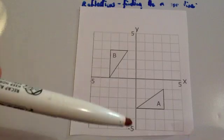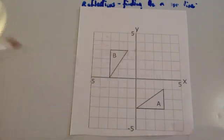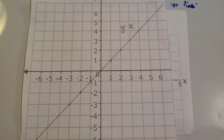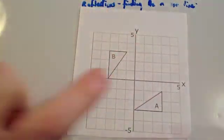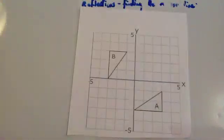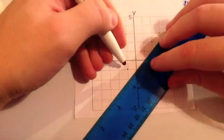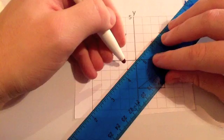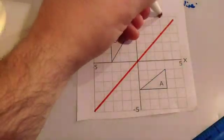This time it's not an x equals or y equals a number graph, because the shape hasn't been flipped vertically or horizontally — it's a diagonal line. In GCSE there are only two diagonal equations they use: y equals x or y equals minus x. It's clearly not y equals minus x; the shape has been reflected across the other diagonal, so the mirror line is y equals x.